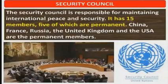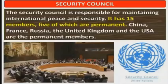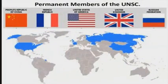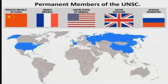Security Council. The Security Council is responsible for maintaining international peace and security. It has 15 members, five of which are permanent. China, France, Russia, the UK, and the USA are the permanent members. Here you can see the People's Republic of China, the French Republic, the United States of America, the United Kingdom, and the Russian Federation. These five countries are the permanent members of the UNSC.